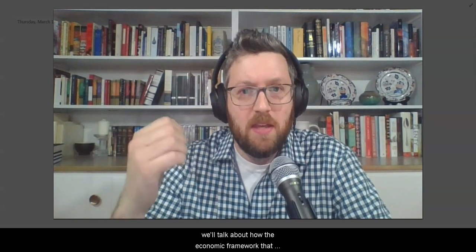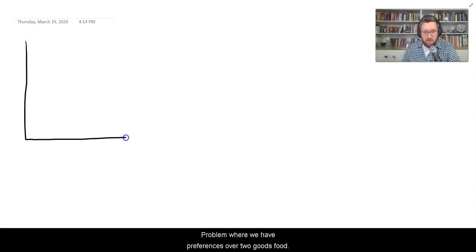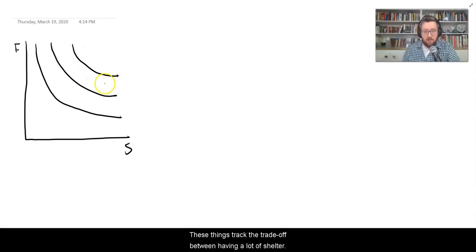So today, or at least in the next 10 minutes, we'll talk about how the economic framework that we've studied so far is used to study these situations too. So let's begin by thinking about how we would approach just a standard kind of problem where we have preferences over two goods, food and shelter. As we've discussed earlier, we model our preferences over these with indifference curves. These things track the trade-off between having a lot of shelter and a lot of food or some mix between the two.